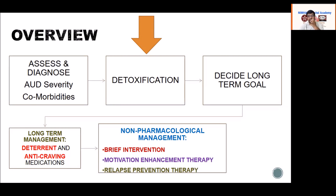Long-term management can be with medicines like anti-craving agents such as naltrexone, or with a deterrent like disulfiram, or without medicines using non-pharmacological management. The three most commonly used non-pharmacological approaches are brief intervention, motivation enhancement therapy — for patients not motivated to quit — and relapse prevention therapy for those who have already stopped and want to maintain abstinence. In this course, we will discuss detoxification today, long-term pharmacological management next week, and brief intervention the week after.